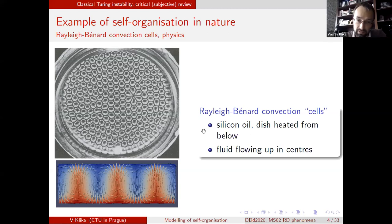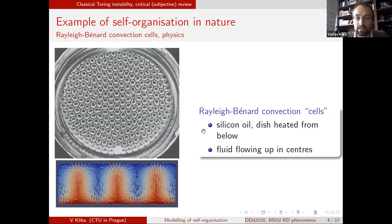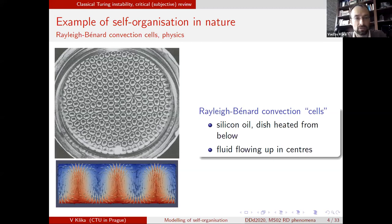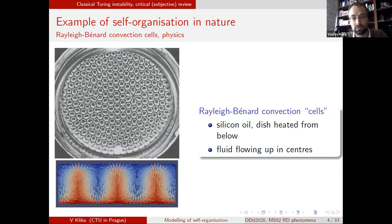Instead of starting with typical examples from developmental biology, I prefer a more controlled environment from physics or chemistry, like Rayleigh-Bénard convection cells — silicon oil heated from below where, if the temperature gradient is large enough, nice convective regular shapes appear and a stable inner flow structure forms.